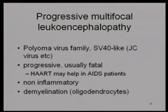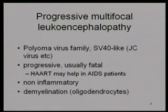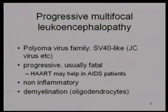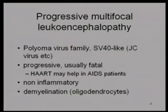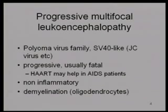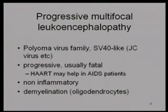Progressive multifocal leukoencephalopathy — hereafter known as PML — is associated with members of the polyomavirus family. Typically, one of those involved is called JC, after the initials of one of the early patients. It's a progressive, usually fatal disease; once you start seeing the symptoms the patient normally just progresses inevitably. However, HAART may help in AIDS patients because this disease seems to be associated with immune suppression — if you can get the immune system back up, you can maybe slow the progression somewhat.